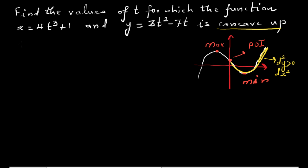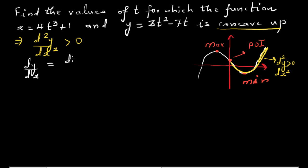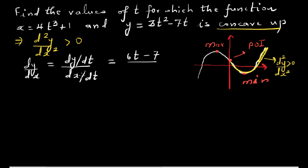To find where it's concave up, we need the second derivative to be greater than zero. First, let's find dy/dx. We have dy/dx = (dy/dt) / (dx/dt). Differentiating y, dy/dt = 6t − 7, and dx/dt = 12t².